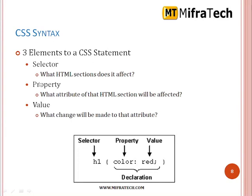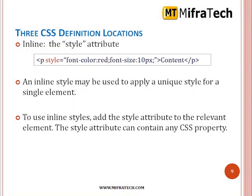Then CSS syntax. There are three major parts: selector, property, and value. The selector determines which HTML element is affected. The property determines what attribute of the HTML element will be affected. The value is which value is given to that attribute. CSS definition locations: inline uses the style attribute on a paragraph element — for example, style equals font color red, font size 10 pixels. An inline style may be used to apply a unique style for a single element by adding the style attribute to the relevant element. The style attribute can contain any CSS property.